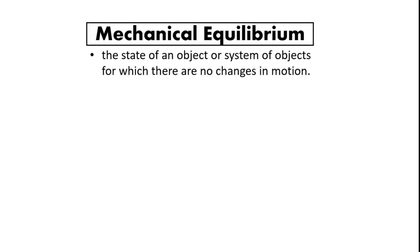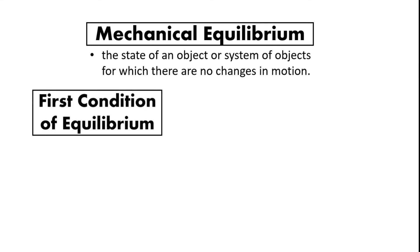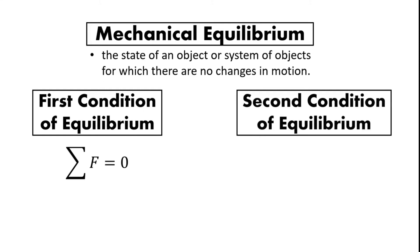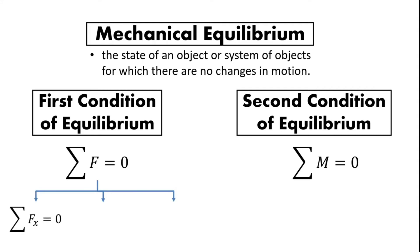Mechanical equilibrium is the state of an object or system of objects in which there are no changes in motion — this is essentially the first law of motion. We will discuss two kinds of equilibrium: the first condition of equilibrium, where the summation of forces equals zero, and the second condition, where the summation of moments or torques equals zero. For forces, we consider the summation of forces on x, on y, and on z for three-dimensional problems.